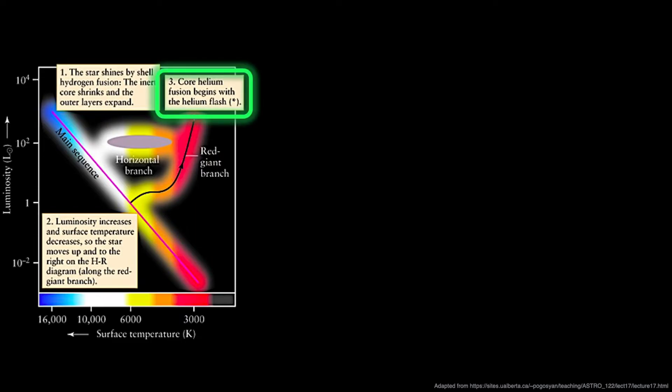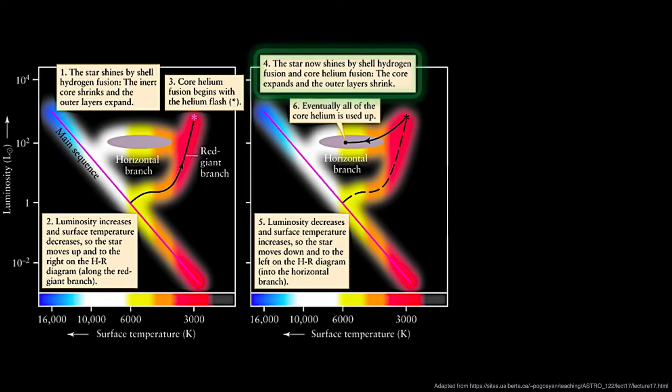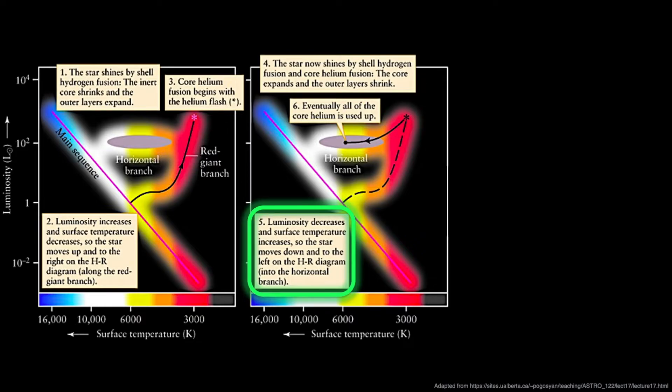Soon after, core helium fusion begins with the helium flash, after which the star begins to emit light through shell hydrogen fusion and core helium fusion. The core expands and the outer layers shrink. As a result, luminosity now decreases a little bit and surface temperature increases, so the star moves down and to the left on the HR diagram into the horizontal branch.